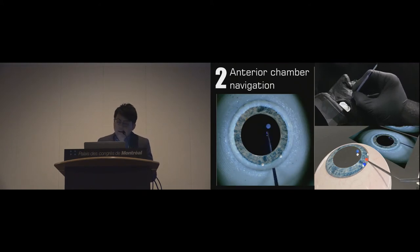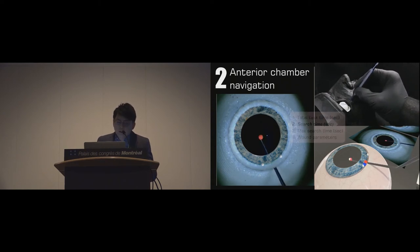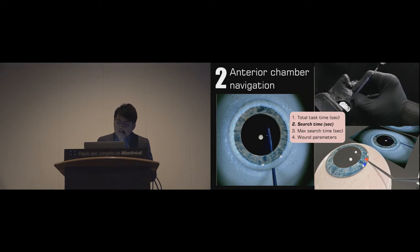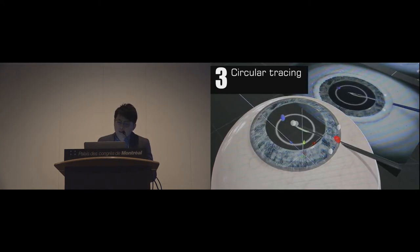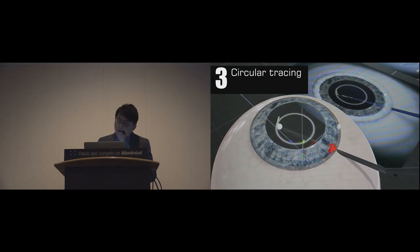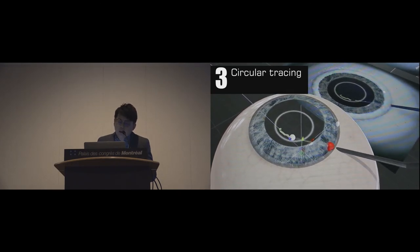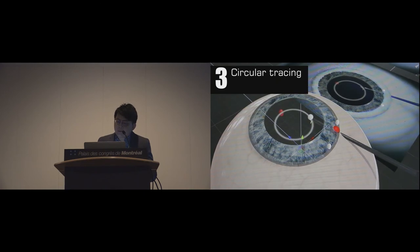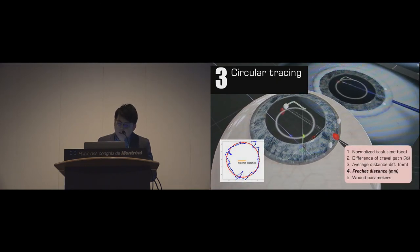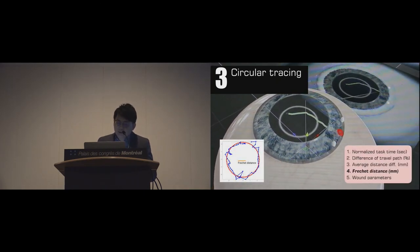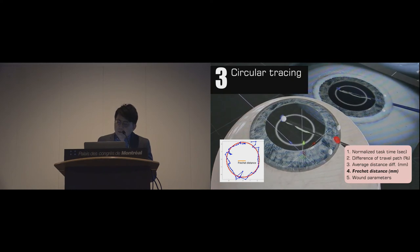The second is anterior chamber navigation module. The user has to touch the white ball first to pop up the blue ball at random depths. The time user takes from white ball to blue ball is the search time. The circular tracing module is the most advanced training of spatula. User has to trace the reference circle with the tip, and the Fréchet distance was calculated to represent the difference from two curves.